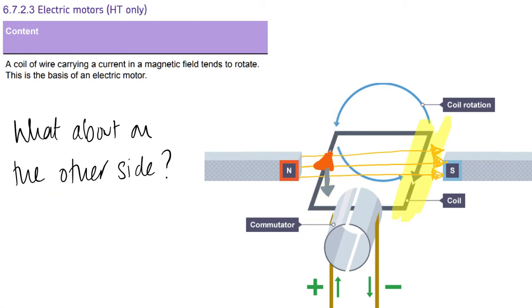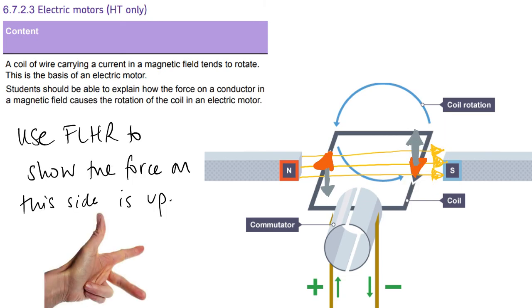But what about the other side? So again, first finger field, left to right. But this time, the current is going this way. So we say that's out of the page. So your second finger is now pointing towards you, and your thumb should be pointing up. So fingers crossed, that's what you've got. And that then gives us rotation in the anticlockwise manner.